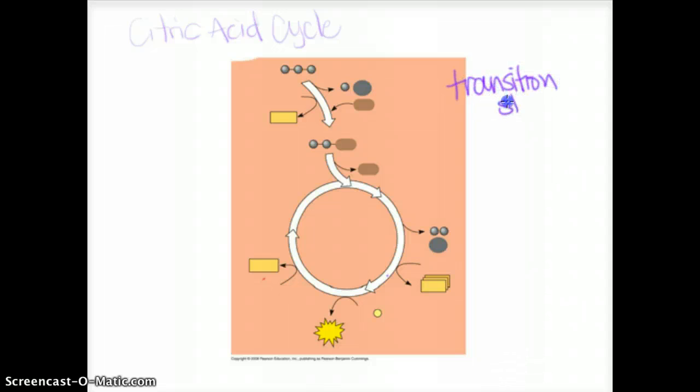The transition step is the part of cellular respiration that takes the pyruvate formed in glycolysis and imports it into the mitochondrial matrix from the cytoplasm. So, this three-carbon molecule right here is pyruvate.